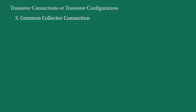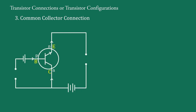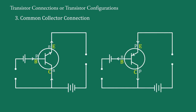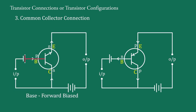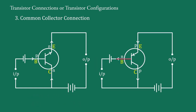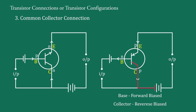The third one is common collector connection. This is the common collector circuit for NPN transistor and this is for PNP transistor. Here the collector is common at input terminals and at output terminals, so it is called common collector connection. In this circuit the base B is forward biased and the collector is reverse biased. In the PNP circuit also, the base is connected with the negative terminal of the battery so it is forward biased, and the collector C is connected with the negative terminal of the battery so it is reverse biased.